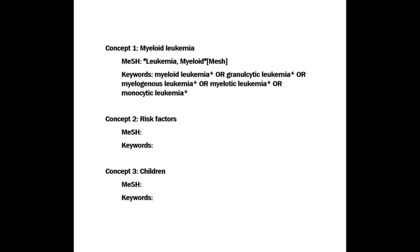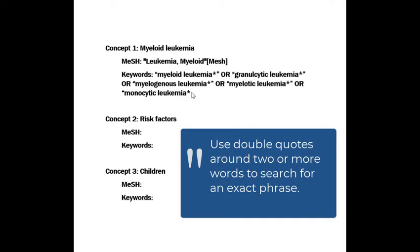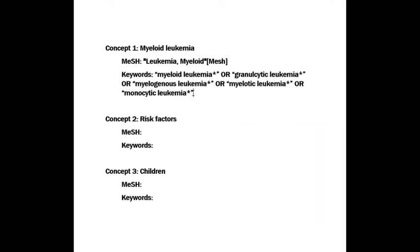I'm also going to place double quotes around any terms containing more than one word — this is called phrase searching. PubMed allows the use of phrase searching and truncation at the same time, but you can only truncate the last word in a phrase. Be sure to double check for any typos or spelling errors before going to the next step. I've misspelled 'granulocytic' in this phrase, so I'll correct that before I move on.